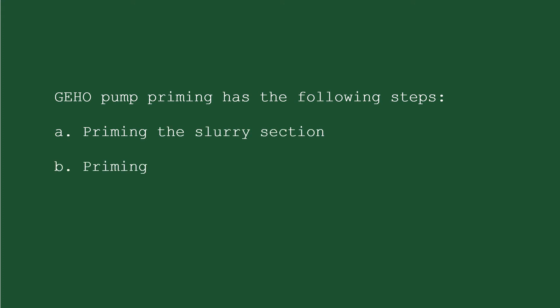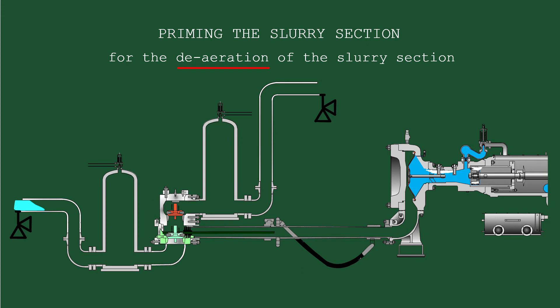Priming the slurry section, priming the propelling liquid section, and the pump manual cranking. Priming the slurry section is done for the deaeration of the slurry section.